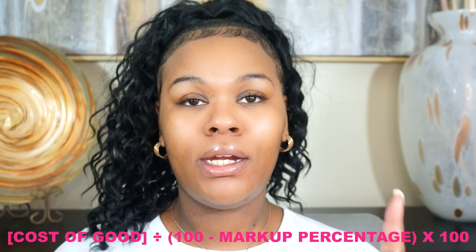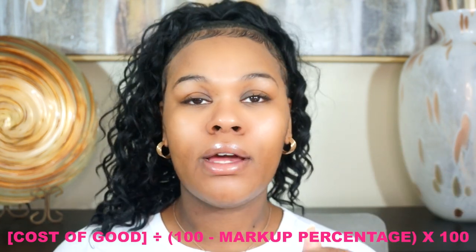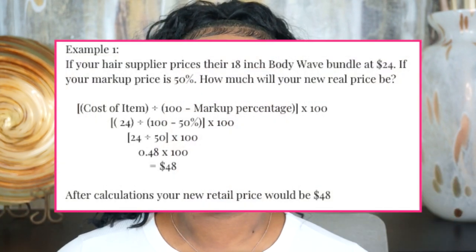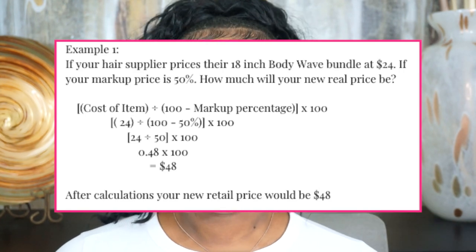Here's the first example. Imagine you're ordering hair from your supplier, and they price an 18-inch body wave bundle at $24 wholesale. If your markup percentage is 50%, after plugging it into the equation, it equals $48. That means your new resale price for that one piece of product would be $48 — essentially doubling it. You do not want to go under 50% because you won't even be making back the actual cost of the product.